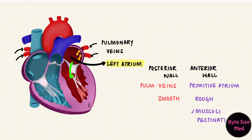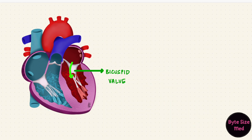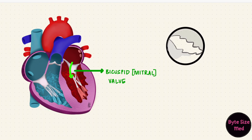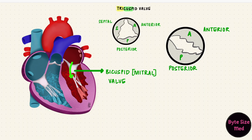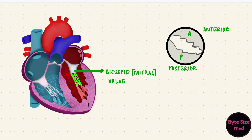Blood from the left atrium enters the left ventricle through the bicuspid valve. Tricuspid is on the right side of the heart; bicuspid is on the left side — it's also called the mitral valve. Bicuspid, so it has two cusps: anterior and posterior, versus the tricuspid which also had a septal leaflet. But just like the tricuspid valve, the free ends of these valve leaflets are attached to the chordae tendineae, which in turn are attached to the papillary muscles, so they work similarly. During ventricular contraction, the papillary muscles contract as well, tensing the chordae tendineae, keeping the valve shut.